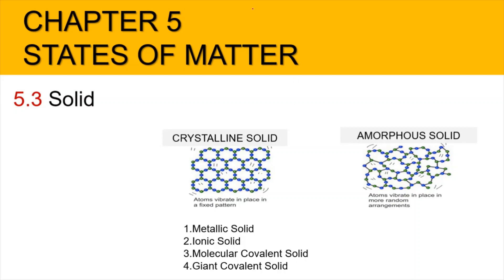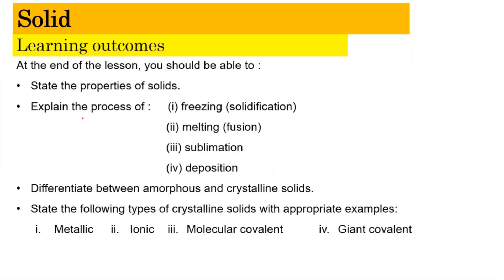Hi, assalamualaikum and a very good morning. We are now in chapter 5, the states of matter, focusing on subtopic 5.3 solids. In this video we're going to learn about the properties of solids, explain the process of freezing or solidification, melting or fusion, sublimation, and deposition. We'll also differentiate between amorphous and crystalline solids, and state the types of crystalline solids — metallic, ionic, molecular covalent, and giant covalent — with appropriate examples.